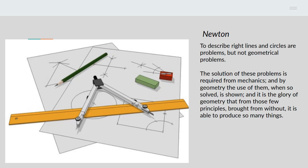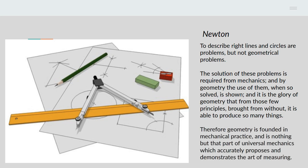It is the glory of geometry that from these few principles brought from without, it is able to produce so many things. So what he's saying is that the principles of the straight line and circle come to geometry from without. They come from practice, from the practice of drawing lines and making circles with compasses. He goes on to say, therefore geometry is founded in mechanical practice and is nothing but that part of universal mechanics which accurately proposes and demonstrates the art of measuring.